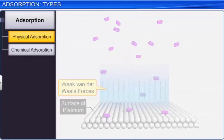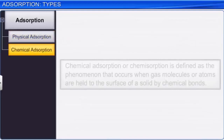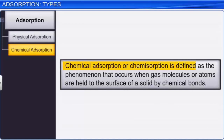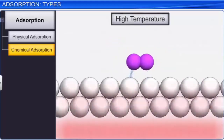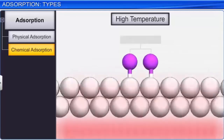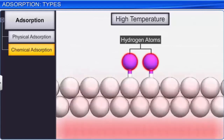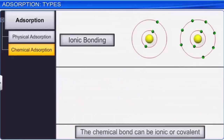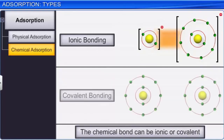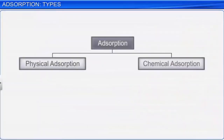Chemical adsorption, or chemisorption, is defined as the phenomenon that occurs when gas molecules or atoms are held to the surface of a solid by chemical bonds. In the example of dihydrogen and platinum, on increasing the temperature, the adsorbed dihydrogen molecules dissociate into hydrogen atoms, which are then held strongly by platinum through chemical bonds. The chemical bond can be ionic or covalent in nature. In some cases, both physical and chemical adsorption may take place at the same time and it may not be possible to identify the type of adsorption.